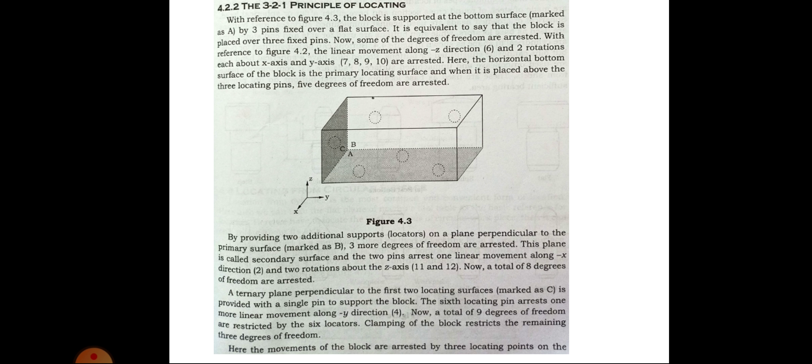By providing two additional supports located on a plane perpendicular to the primary surface, that is marked as B, three more degrees of freedom are arrested. This plane is called a secondary surface, and the two pins arrest one linear movement along minus X direction, that is two, and two rotations above the Z-axis, that is eleven and twelve. Now, a total of eight degrees of freedom are arrested. A tertiary plane perpendicular to the first two locating plane surfaces, that is marked as C, is provided with a single pin to support the block. The sixth locating pin arrests one more linear movement along Y direction, that is four. Now, a total of nine degrees of freedom are arrested by the six locators.